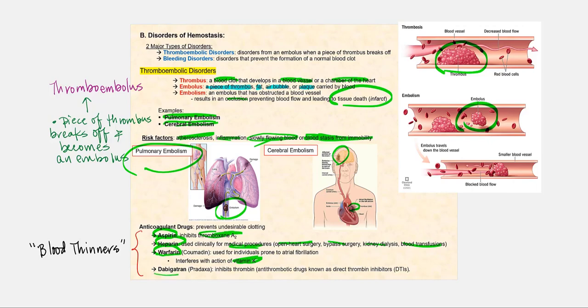The dabigatran, or pradaxa, directly inhibits thrombin. And without thrombin, we cannot activate fibrinogen to fibrin. And it's a class of anticoagulant drugs that are known as direct thrombin inhibitors.